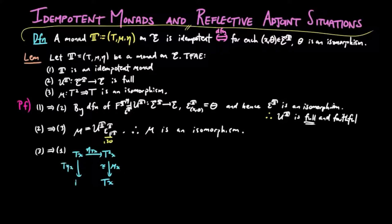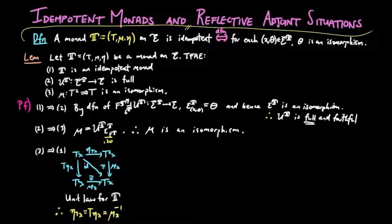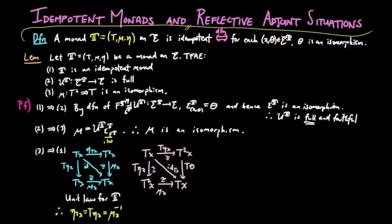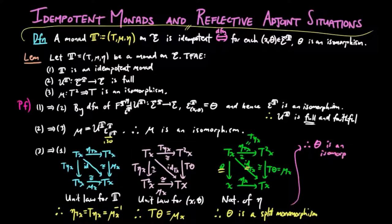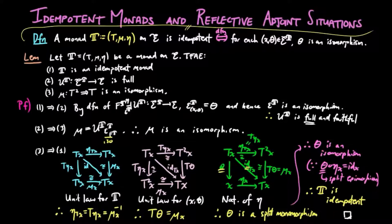Finally, for 3 implies 1: by the unit law for the monad T, the above diagram commutes, and we have eta Tx equal to T eta x equal to mu x inverse, since mu x is an isomorphism. And so, for an Eilenberg-Moore object xθ, by the unit law for xθ, the above diagram commutes, and we have Tθ equal to mu x. So by the naturality of eta, the diagram above commutes, and thus θ is a split monomorphism. Therefore θ is an isomorphism, since θ eta x equal to the identity shows that θ is also a split epimorphism. Therefore each T-action is an isomorphism, and so T is idempotent, which completes this proof.